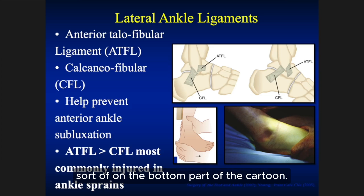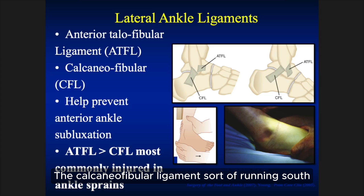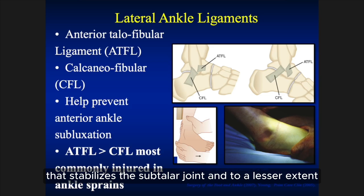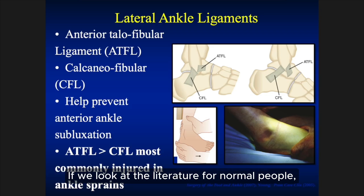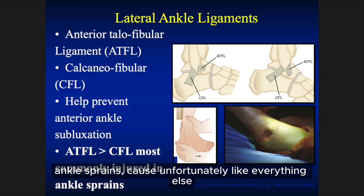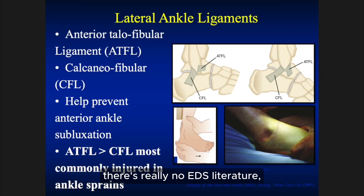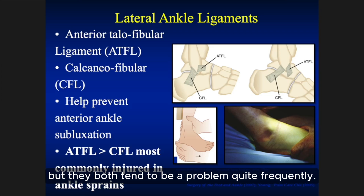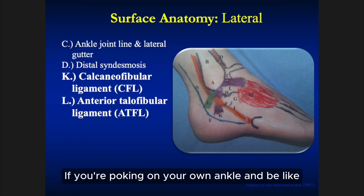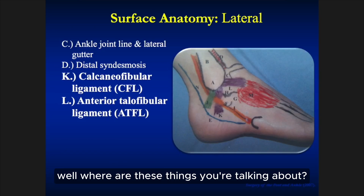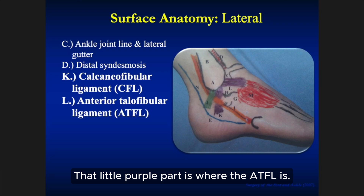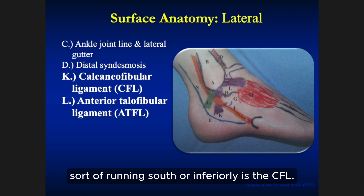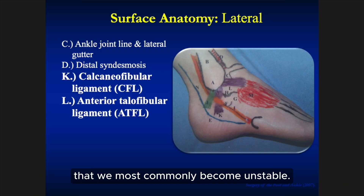There's also the CFL — the calcaneofibular ligament — running inferiorly, which stabilizes the subtalar joint and to a lesser extent the ankle. That is commonly involved in EDS patients as well. Looking at the literature for normal people, the ATFL is more commonly injured than the CFL, but both tend to be a problem quite frequently. If you're poking on your own ankle, the little purple bar at the top near the fibula is the ATFL, and the second purple bar running south is the CFL — the two most common sites of instability.